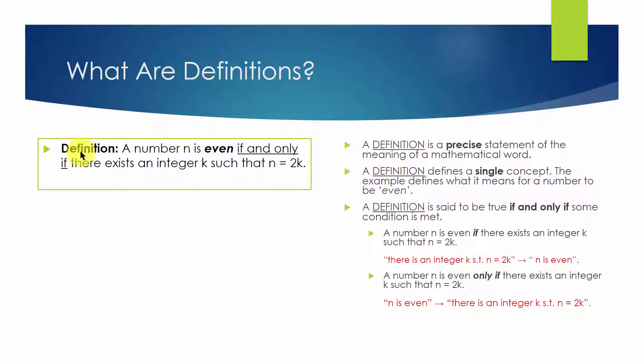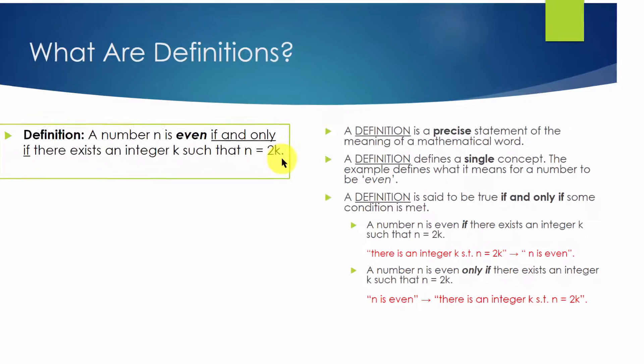Here it says, definition: a number n is even if and only if there exists an integer k such that n equals 2 times k.